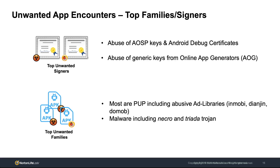A look at the top unwanted families shows that most of these are actually PUPs, including abusive ad libraries. But we also see notorious malware families like the Necro and the Triada Trojans.